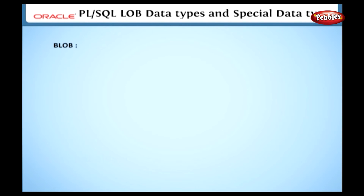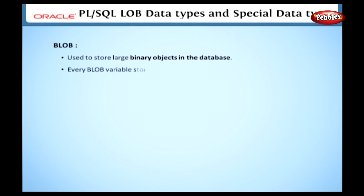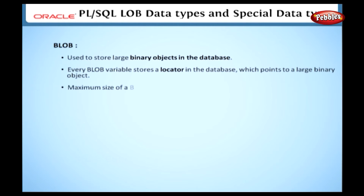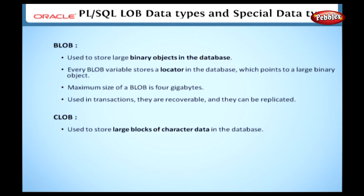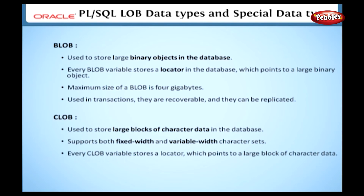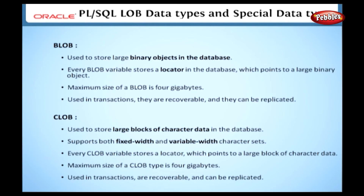Next, we will see the BLOB data type. BLOB data type is used to store large binary objects in the database. Every BLOB variable stores a locator in the database which points to a large binary object. The maximum size of a BLOB is 4 gigabytes. BLOBs can be used in transactions, they are recoverable, and they can be duplicated. Now let's discuss the CLOB type. CLOB data type is used to store large blocks of character data in the database. It supports both fixed width and variable width character sets. Every CLOB variable stores a locator which points to a large block of character data. The maximum size of a CLOB type is 4 gigabytes. CLOBs can be used in transactions, they are recoverable, and they can be replicated.